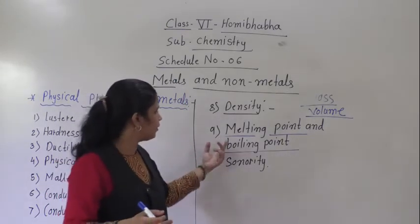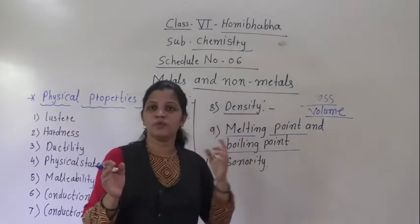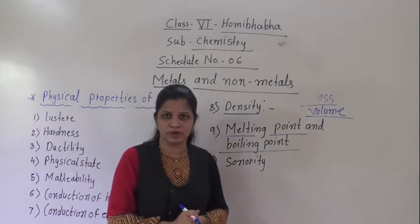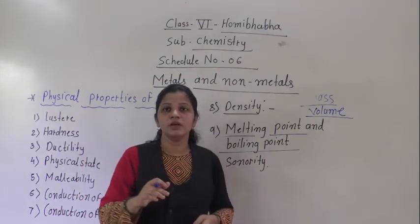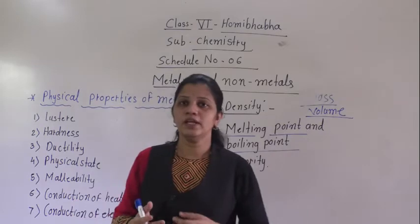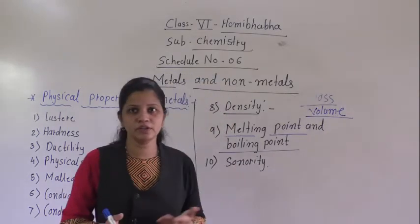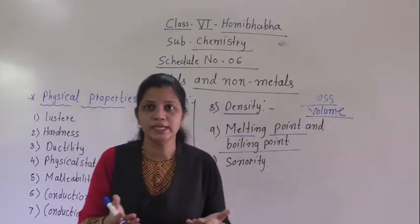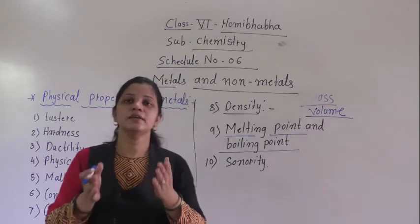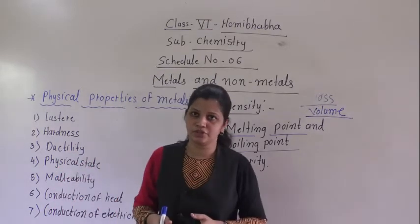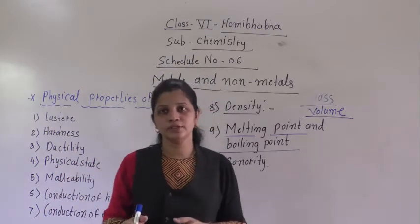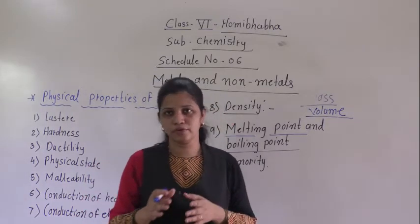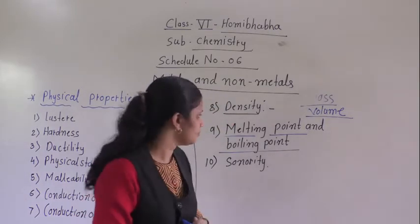All metals have a high melting point as well as a high boiling point. Boiling point means when it starts to boil. For example, what is the boiling point of water? 100 degrees Celsius — at 100 degrees Celsius, water starts to boil, so that is known as the boiling point of water. Mostly metals have a high melting point and boiling point.